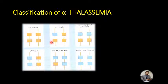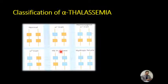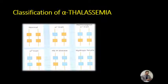With the help of this picture, we can easily understand the classification of alpha thalassemia. The picture shows the normal pattern for alpha genes, then one chain deleted, two chains deleted, three genes deleted, and finally in hydrops fetalis all four genes are deleted — telling the same story in a simple visual form.